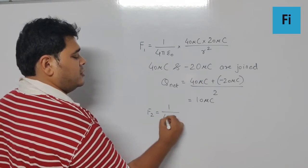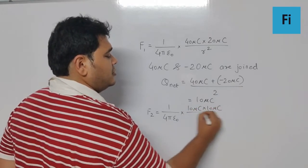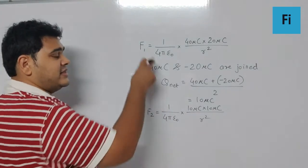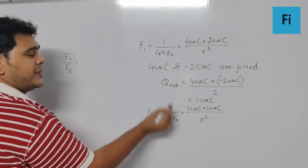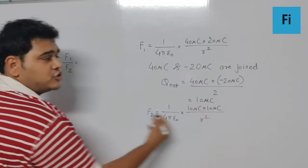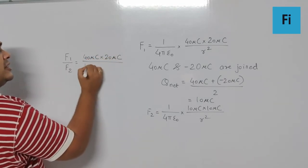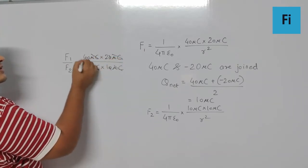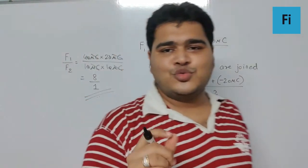F2 = (1/4πε₀) × (10μC × 10μC) / r². Cancelling the microcoulomb units and simplifying, we get F1/F2 = 8/1. So your final answer is 8 is to 1.